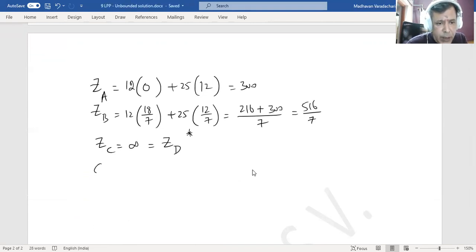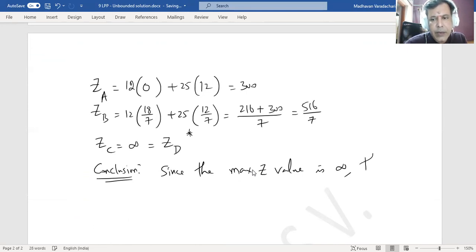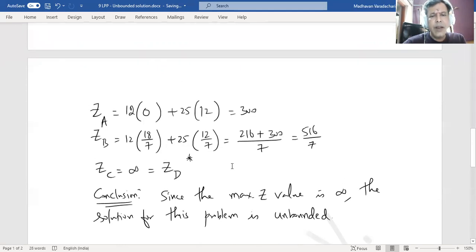Since the max Z value is infinity, the solution for this problem is unbounded. There is no boundary for it. It can go up to infinity. So I mean we cannot specifically find out a solution for this because it is unbounded. That is the meaning of unbounded solution.